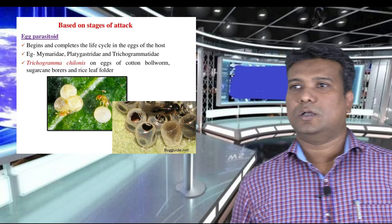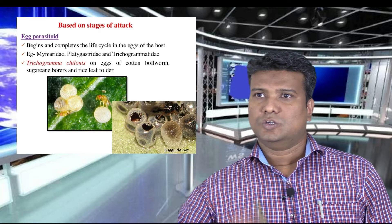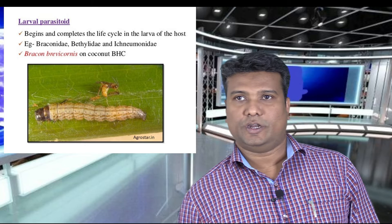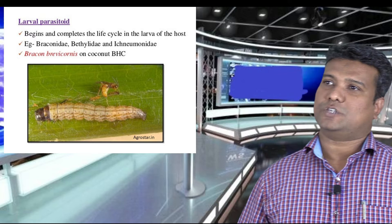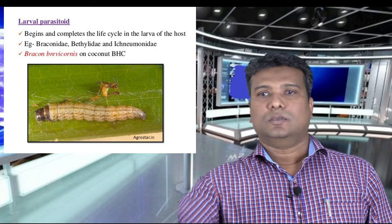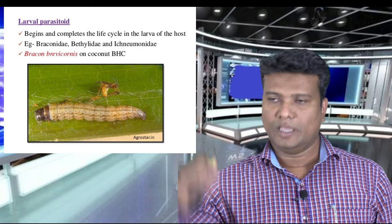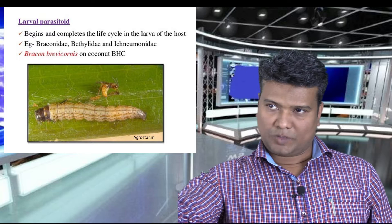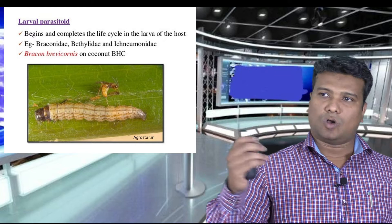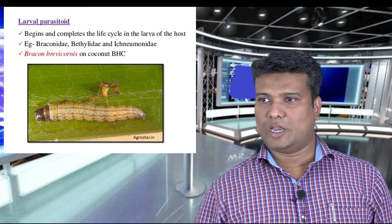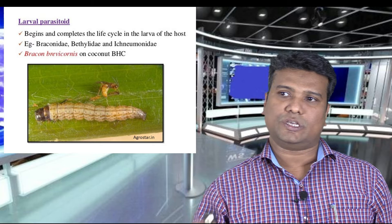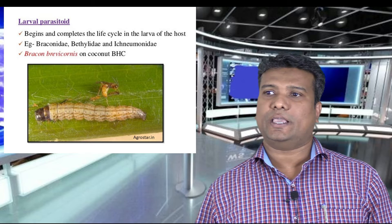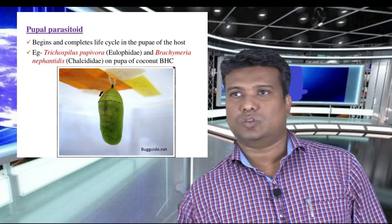A specific example is Trichogramma chilonis, which affects cotton bollworms, sugarcane borers, and leaf folders. The next type is the larval parasitoid, which begins and completes its life cycle on the larval host — they utilize larvae, especially caterpillars, laying their eggs inside the caterpillars of economically important pests. The best example is Bracon, specifically Bracon barbicornis, which lays its eggs on coconut black-head caterpillar. In the slide, the parasitoid is injecting its egg using its specialized ovipositor into the larva.